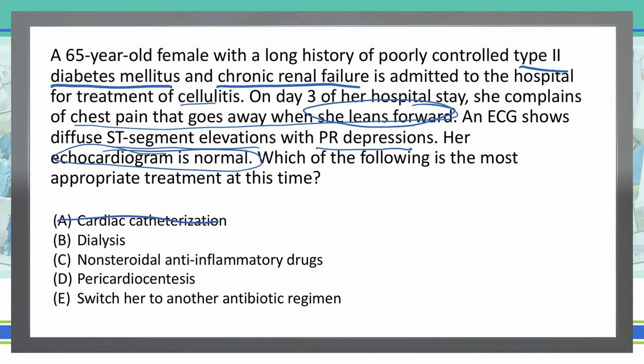Option B: dialysis. Dialysis might be a possible answer here. Typically, pericarditis in this setting can be caused by hyperuricemia invading the pericardial sac. We can remove that uric acid from the blood with dialysis because she does have chronic renal failure, so I'm going to leave that as an option.